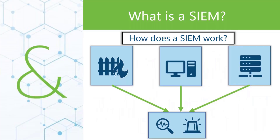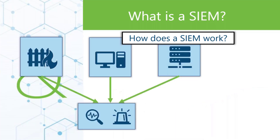So kind of graphically, how a SIEM works — and how we do it with our customers — is we point all this log information: the logs from a firewall, the logs from a web server, or maybe from our domain controller, logs from maybe a core switch, and we point those at our SIEM, which is then going to look at all of these and start doing correlations.